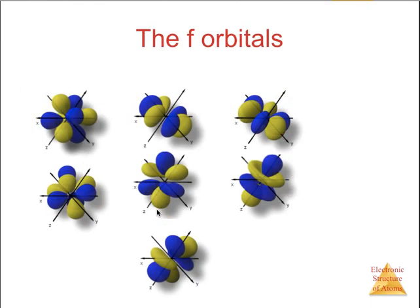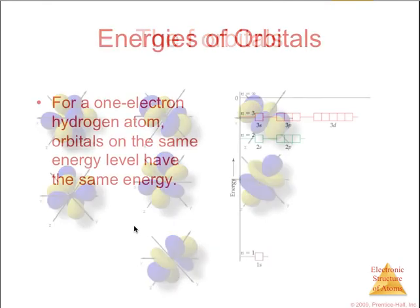The f orbitals look like these. You don't need to know the shapes of these, it's just interesting to see what the probability of the electron densities are as we go up in sublevels.